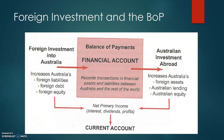There are also subsequent flows linked to investment which are recorded in the current account. For instance, flows related to investment in debt include interest payments that occur maybe six months or a year after the initial borrowing. Similarly, after an initial investment in shares — recorded in the financial account — there may be a dividend payment six months or a year later, which is another transaction recorded in the current account. Both interest payments and dividend payments are recorded in the current account under the income component.